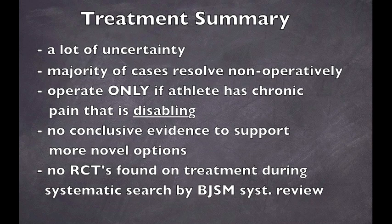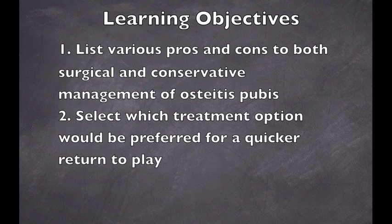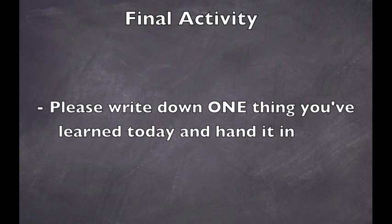Based on available case reports, first-line therapy for osteitis pubis should consist of conservative therapy and/or injections, given a good safety profile and a low level of invasiveness. Level 4 evidence also suggests that surgical intervention provides a reasonable treatment option in refractory cases. Recommendations for further research include RCTs with various treatment arms for osteitis pubis. To review the learning objectives: the goal was to list pros and cons of both surgical and conservative management and select which treatment would be preferred for a quicker return to play. To end this lecture, please write down one thing you learned and hand it in to us at the front.